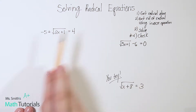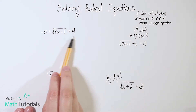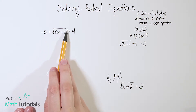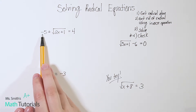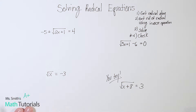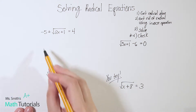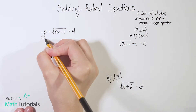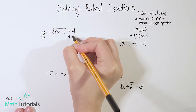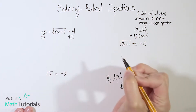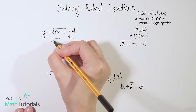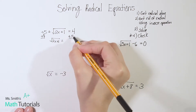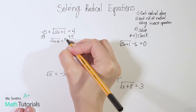So the first step is get the radical alone on one side of the equation. Right now, this is my radical, and it's not alone because I've got this negative five hanging out over here. So I'm going to need to move that negative five over by adding it — let's move it to the other side. So now I've got square root of two x plus one equals four plus five, which is nine.